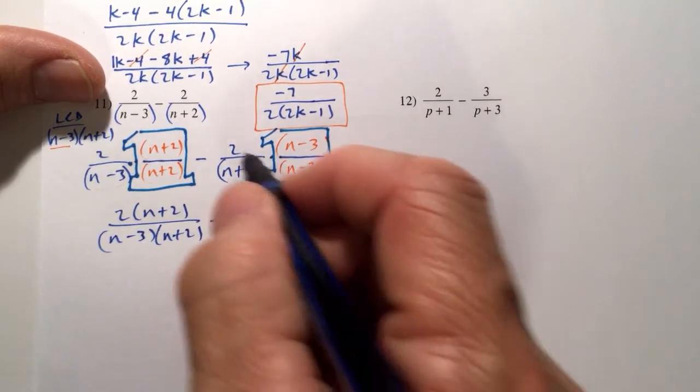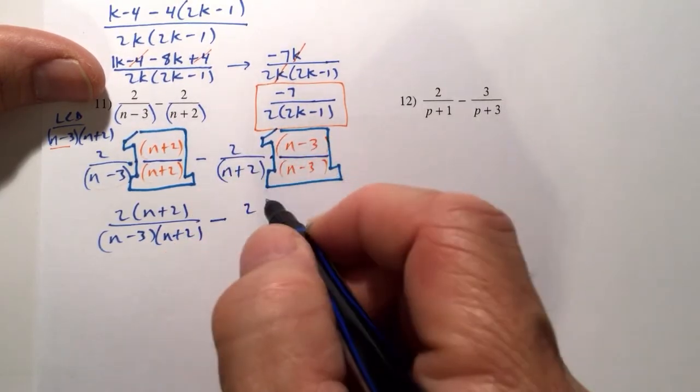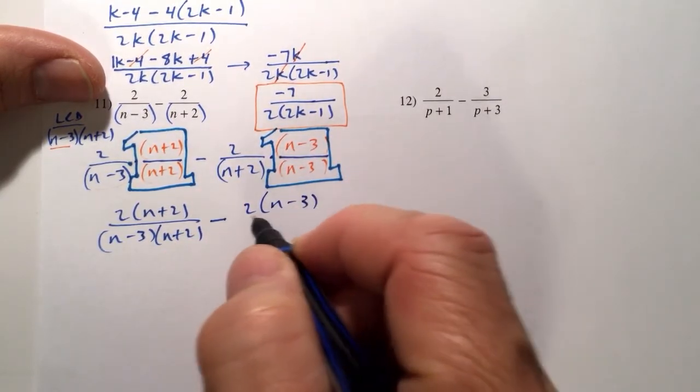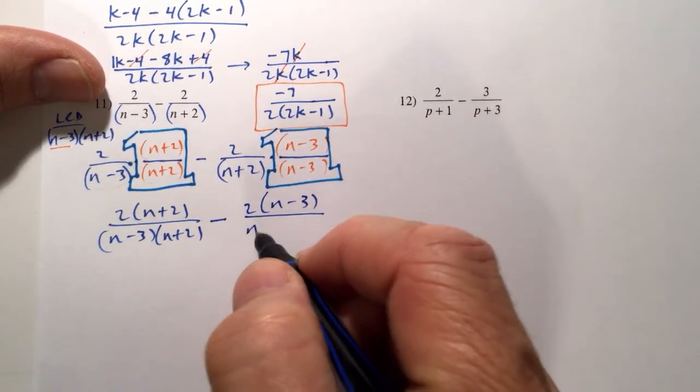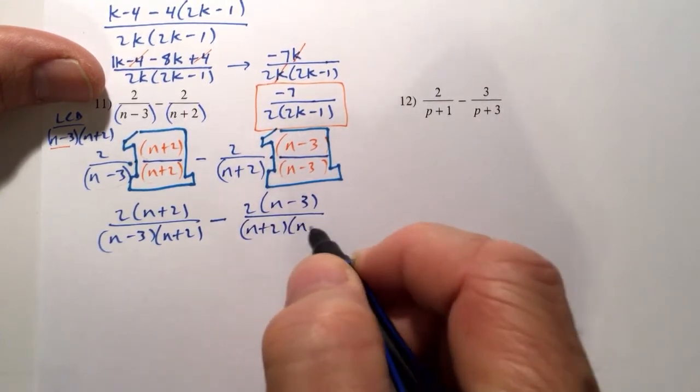Minus. Over here, we have 2 times the quantity n minus 3. And that is also over n plus 2 times n minus 3.